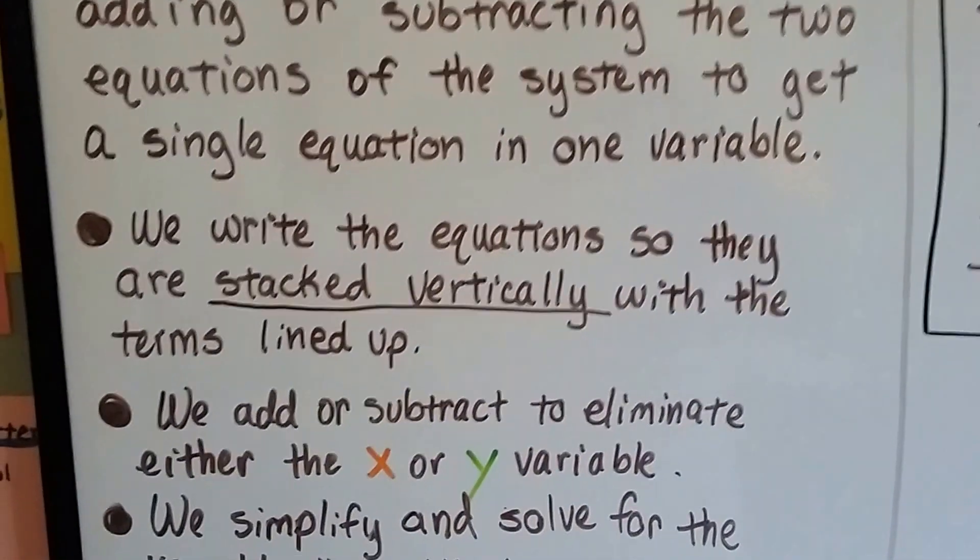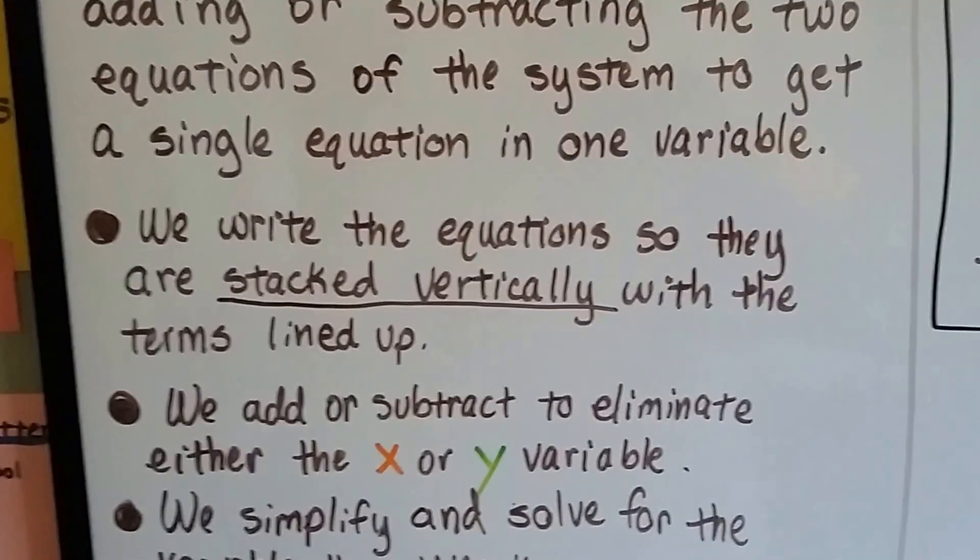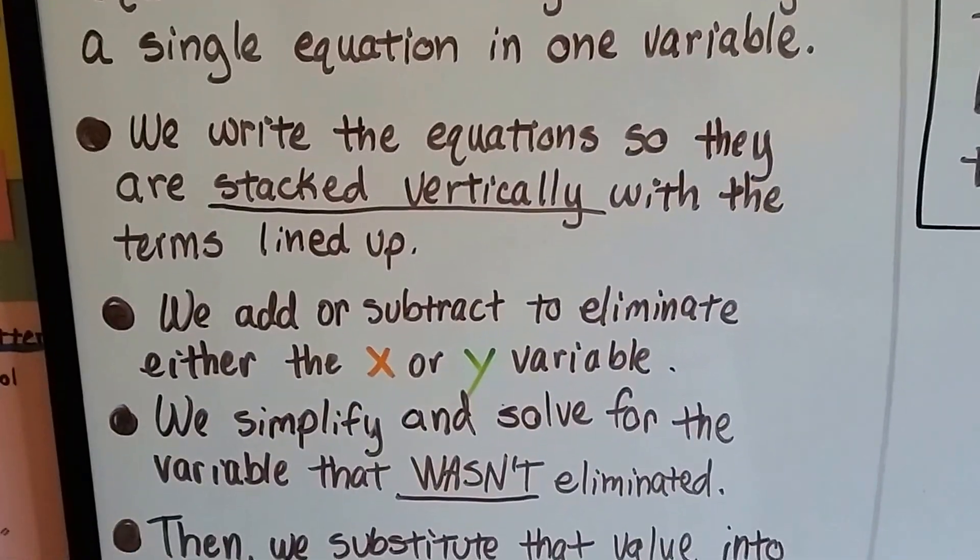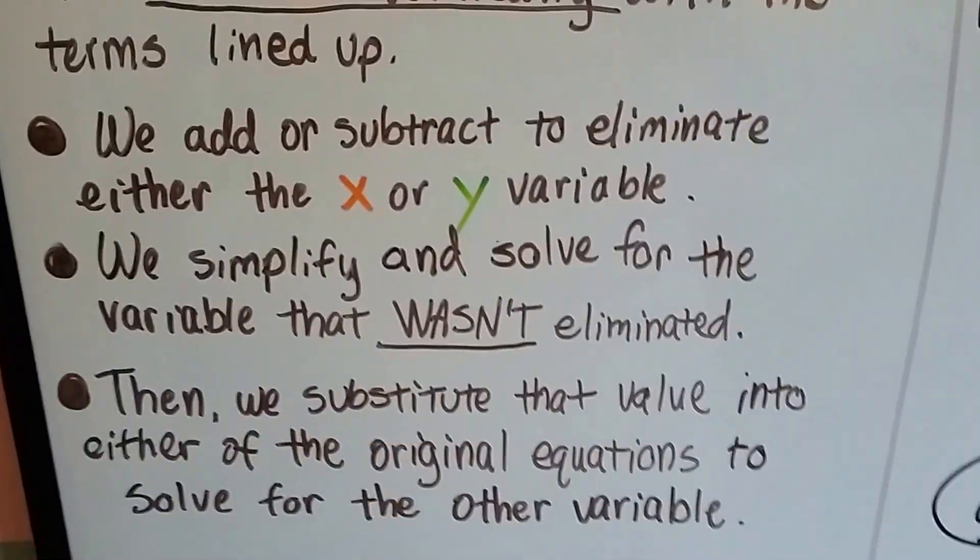We write the equations so that they're stacked vertically with the terms lined up nice and neat. And we add or subtract to eliminate either the x or y variable, and we simplify and solve for the variable that wasn't eliminated.